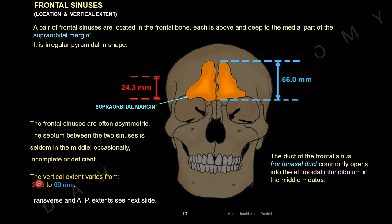The vertical extent of the frontal sinuses varies from 24.3 mm to 66 mm. The duct of the frontal sinus — the frontonasal duct — commonly opens into the ethmoidal infundibulum in the middle meatus.